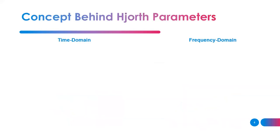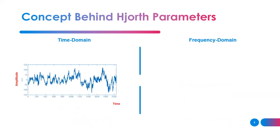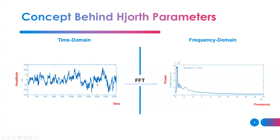The concept behind Hjorth parameters involves two domains: time domain and frequency domain. When you have a specific signal — whether EEG, EMG, or any other signal — you use the FFT to look at its power spectrum. In the time domain, the x-axis is time and the y-axis is amplitude. In the frequency domain, the x-axis is frequency and the y-axis is the power spectrum, representing the contribution of that specific frequency to your signal.